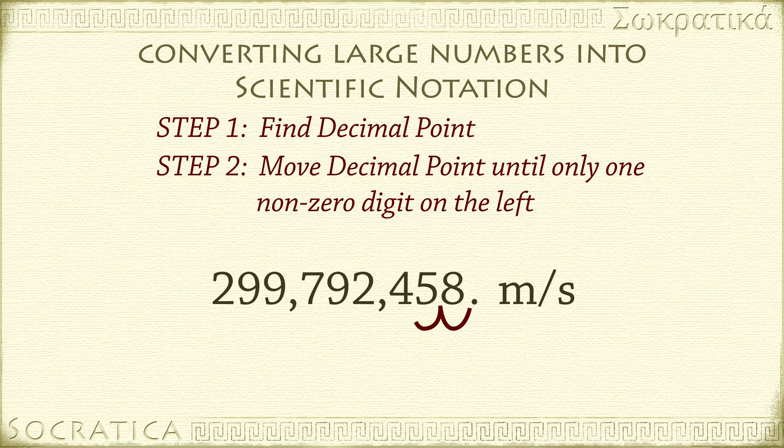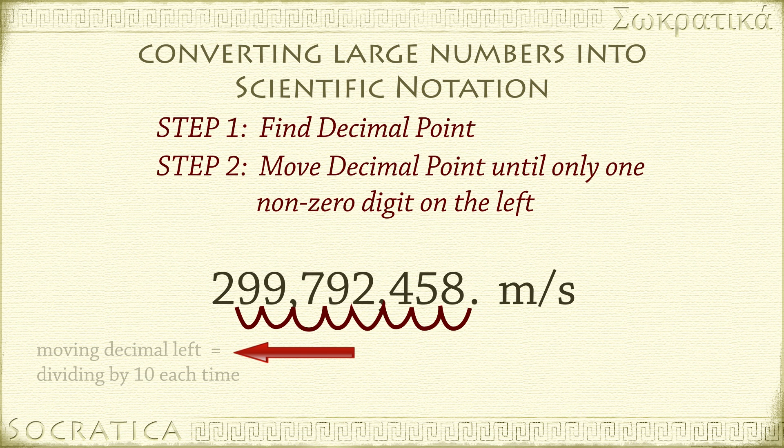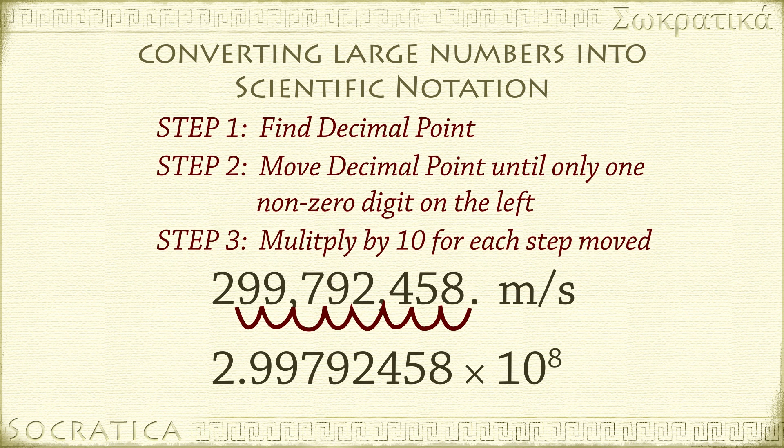1, 2, 3, 4, 5, 6, 7, 8. We moved the decimal to the left eight times. That's equivalent to dividing the number by 10 to the eighth. To make sure we don't actually change the value of the number, we have to multiply by 10 to the eighth.